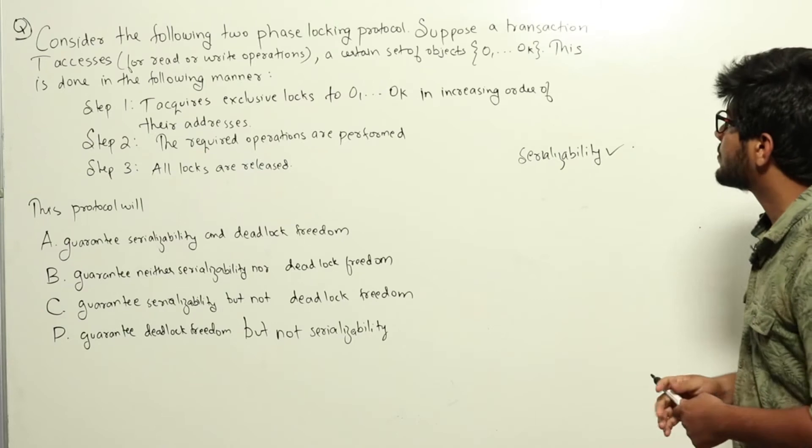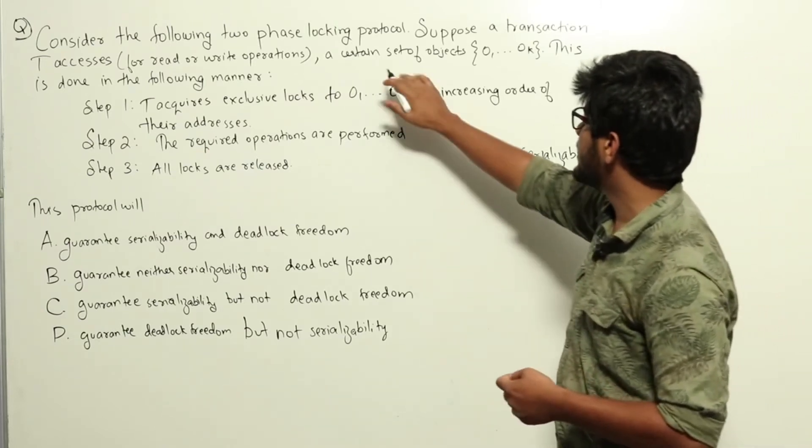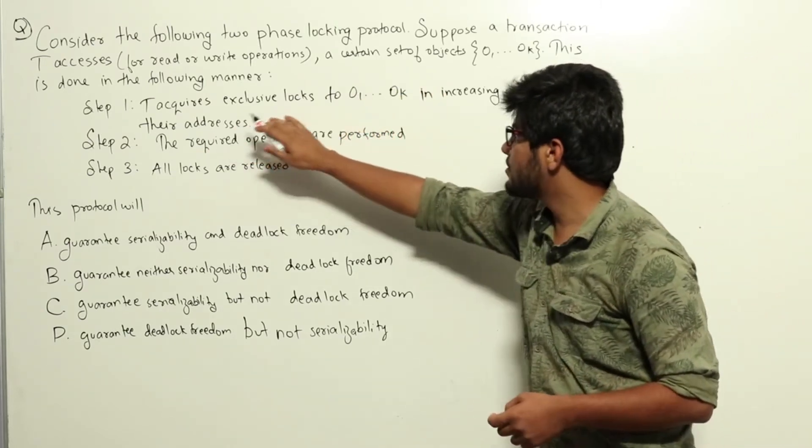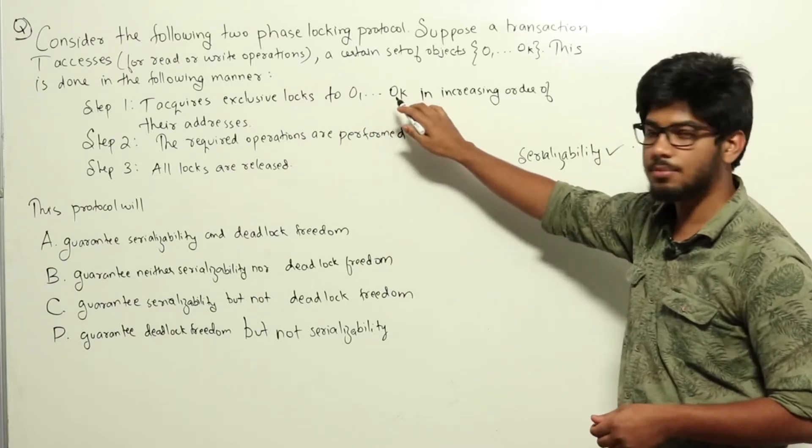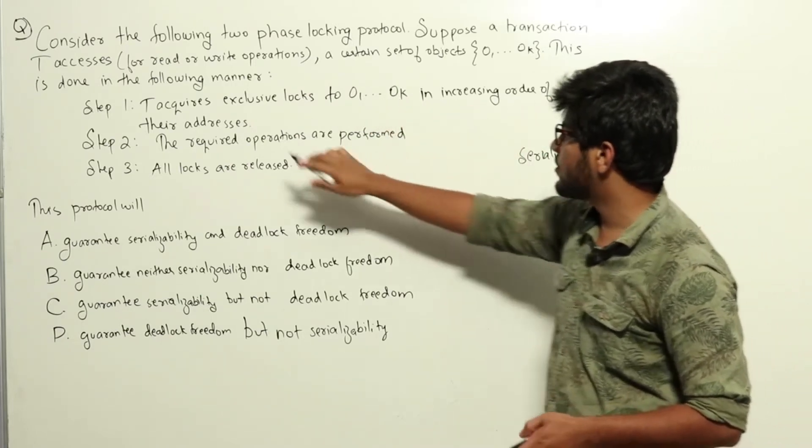Now, coming to deadlock freedom. Here it is said that we are accessing exclusive locks to O1, O2, etc., up to OK in increasing order of their addresses.